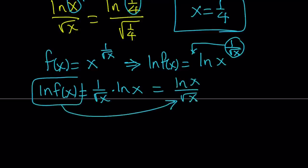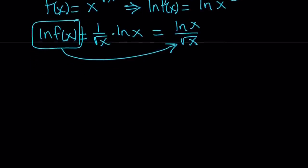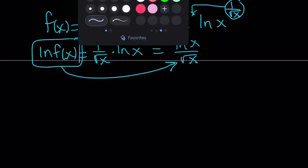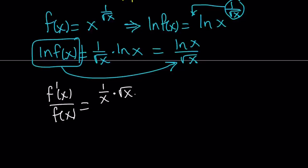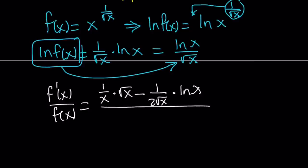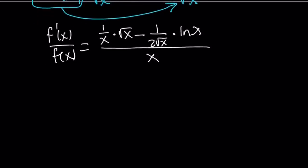Now I'd like to differentiate both sides. To differentiate ln of a function we use the chain rule: if you have ln of u, the derivative is u prime divided by u — so here it's f prime divided by f. The right-hand side uses the quotient rule: derivative of ln x times square root of x, minus derivative of square root of x times ln x, all divided by (square root of x) squared, which is just x. And you can replace f(x) with x to the power 1 over square root of x.